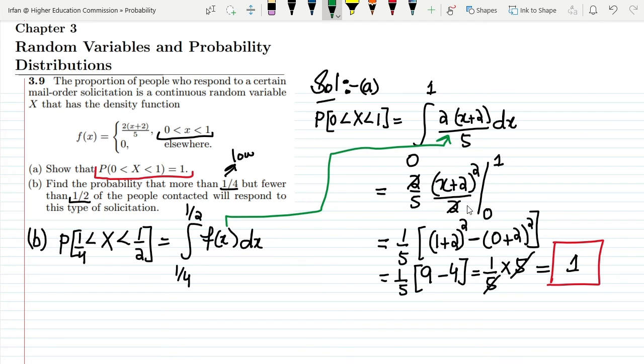We have already found it out, just we have to change the limits. It would be 2/5 times (x + 2)² divided by 2, which cancels out. Now the limits are from 1/4 to 1/2.